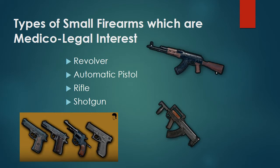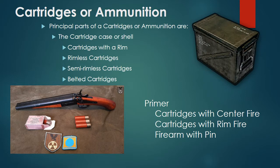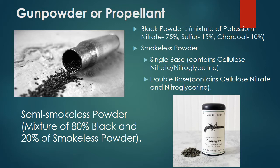Principal parts of a cartridge or ammunition: the cartridge case or shell — including rimmed, rimless, semi-rimless, and belted cartridges. The primer: center-fire cartridges, rim-fire cartridges, and pin-fire firearms. Gunpowder or propellant: black powder is a mixture of potassium nitrate 75%, sulfur 15%, and charcoal 10%. Smokeless powder — single base contains cellulose nitrate; double base contains cellulose nitrate and nitroglycerin.